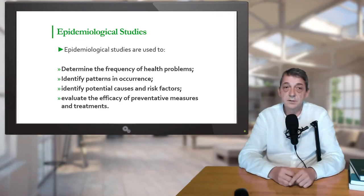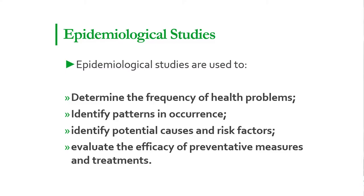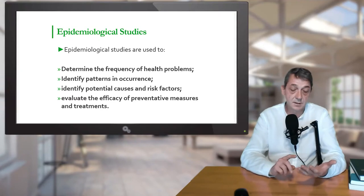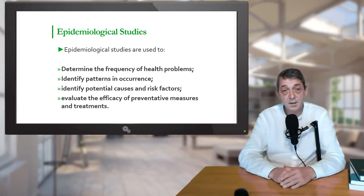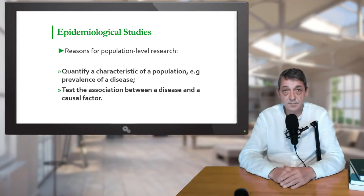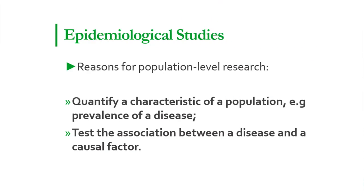Epidemiological research is always conducted at the level of population. That population might consist of animals, herds, villages, farms, regions and so on. There are two main reasons why an epidemiologist performs population-level research, and most often it is not the whole population but just a fraction or sample of the population.